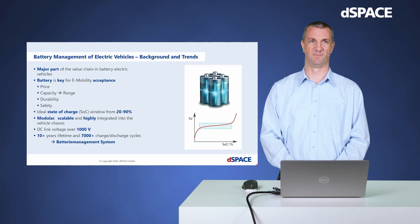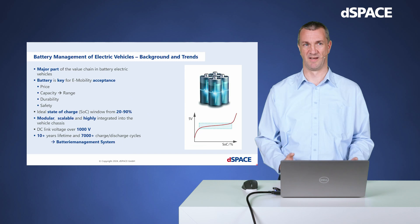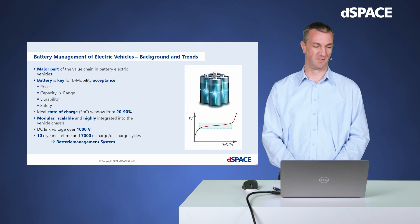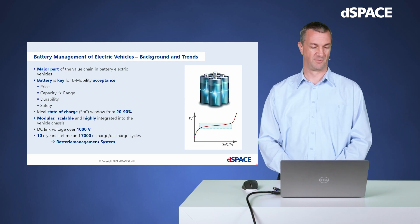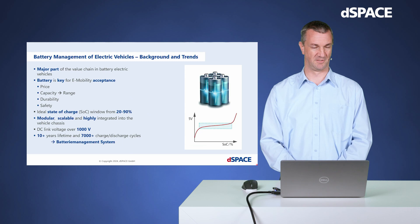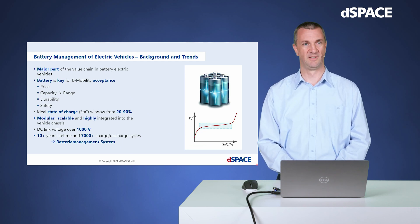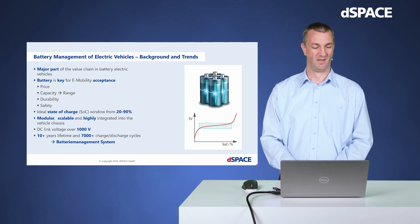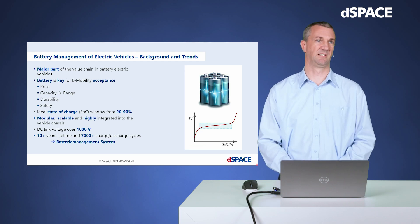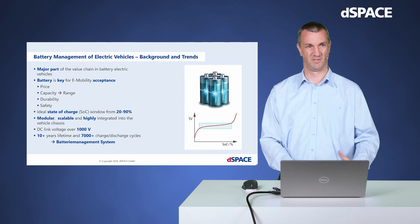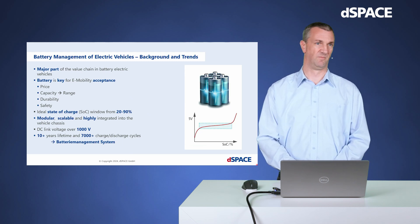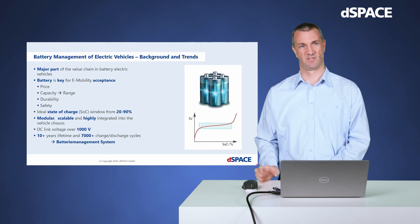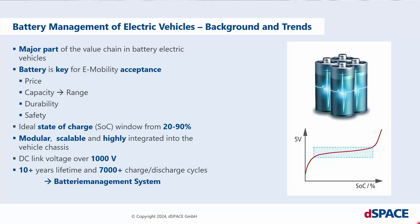Let's start with a short introduction. What is the battery management system? Let's assume you have an electric car — the battery is the most important and most cost-intensive part. The battery determines how far you can drive. An important topic is the so-called state of charge; the battery should be kept between 20% and 90%. The battery consists of several cells that have to be balanced, operate at high voltages, and you want a lifetime of more than 10 years. All of that has to be managed — that's called a battery management system.